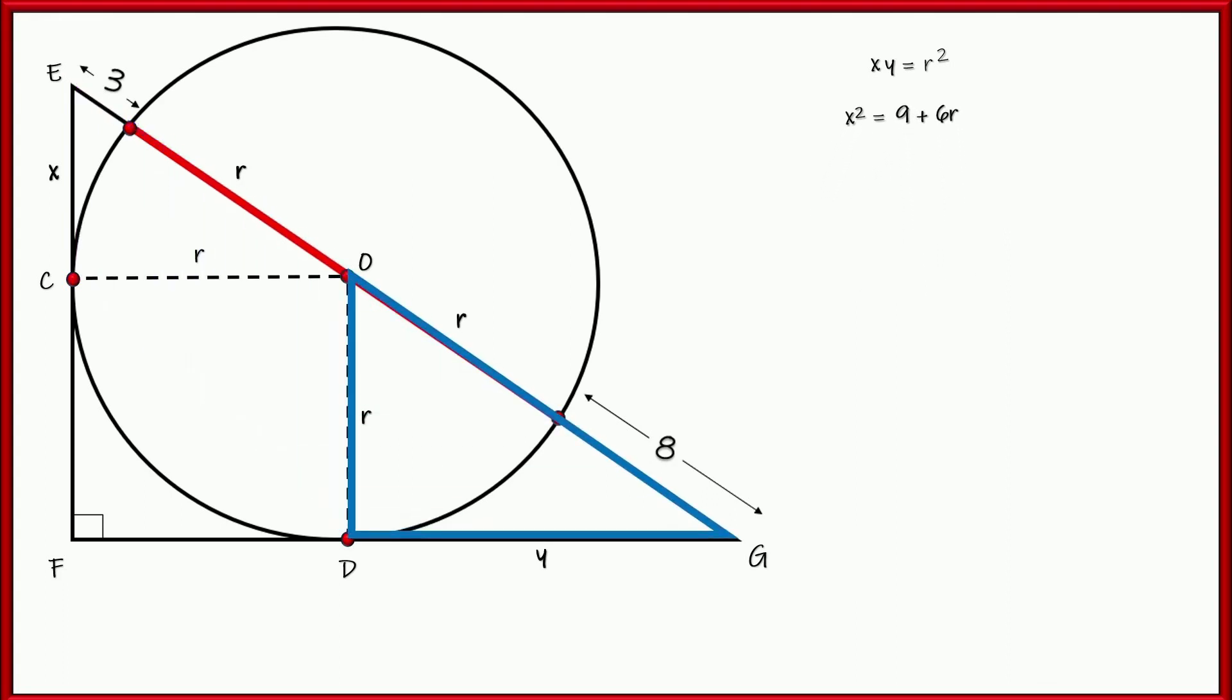Let's do the same treatment for the other triangle, DOG. Right, so Pythagorean theorem, Y squared plus R squared is equal to R plus 8 squared. So let's go ahead and square 8 plus R. I'm going to get 64 plus 16R plus R squared. Once again, they both have an R squared on each side. Each side of the equation has an R squared, so we can get rid of those.